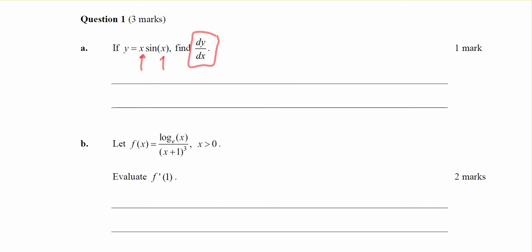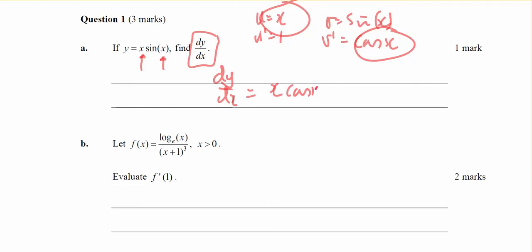u equals x so u dash equals 1, v equals the sine of x, and using the formula sheet v dash is equal to cos of x. Since I cross multiply, dy dx will equal x times cos of x plus 1 times the sine of x, and that's my answer.